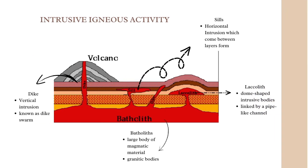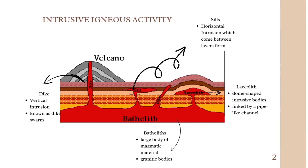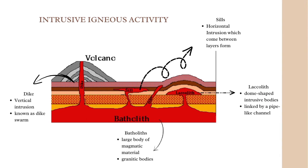We will now discuss intrusive activity. Intrusive volcanic activity takes place beneath the earth's surface when magma is forced to rise to the surface, but only a small amount actually makes it to the top. The majority of the magma is intruded into the crust, where it solidifies and forms a range of features. Some intrusion landforms include dikes, sills, batholiths, and laccoliths. Dikes are vertical intrusions which cut across the layers of rocks and often occur in groups, known as dike swarms. Sills, on the other hand, are horizontal intrusions which come between layers.